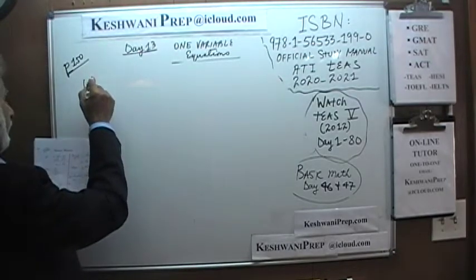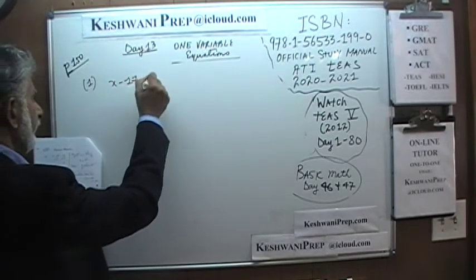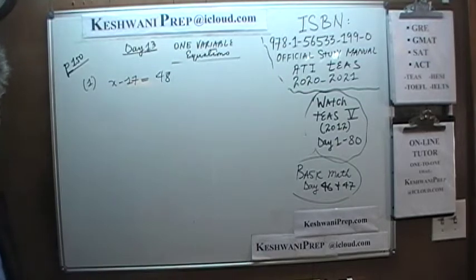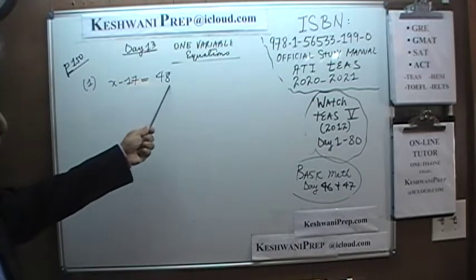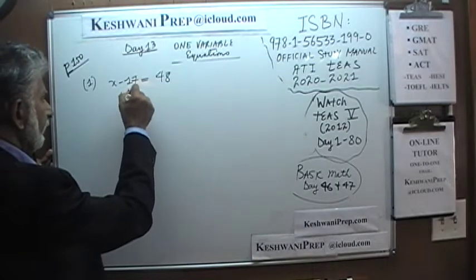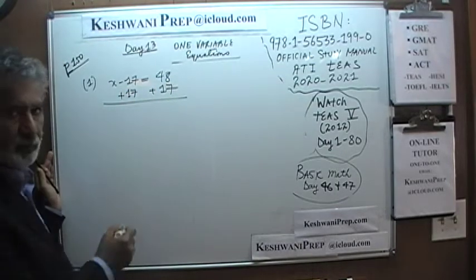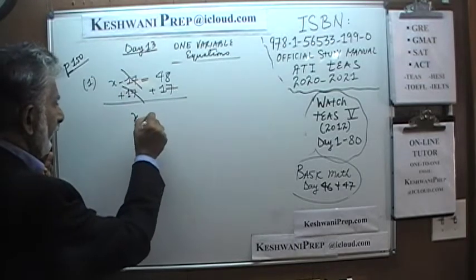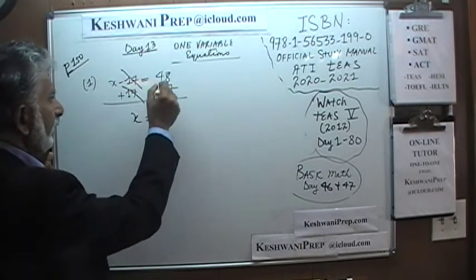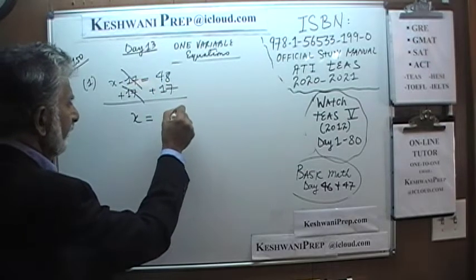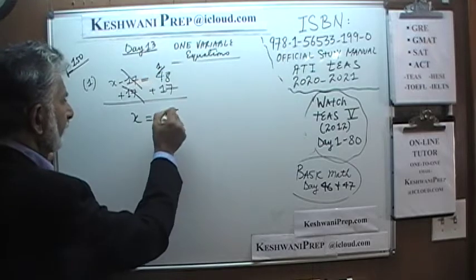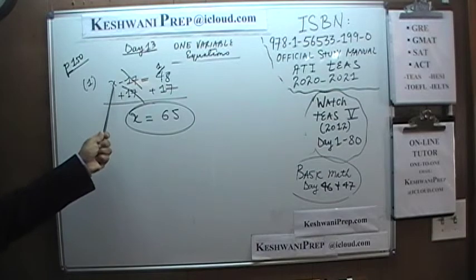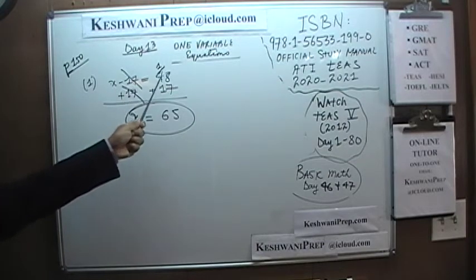Number one: x minus 17 is equal to 48. How do we go about finding the value of x? We bring the 17 to this side by adding 17 to both sides. The negative 17 and positive 17 cancel each other, and x equals 48 plus 17, which is 65. You can verify it by putting it back: 65 minus 17 is 48.